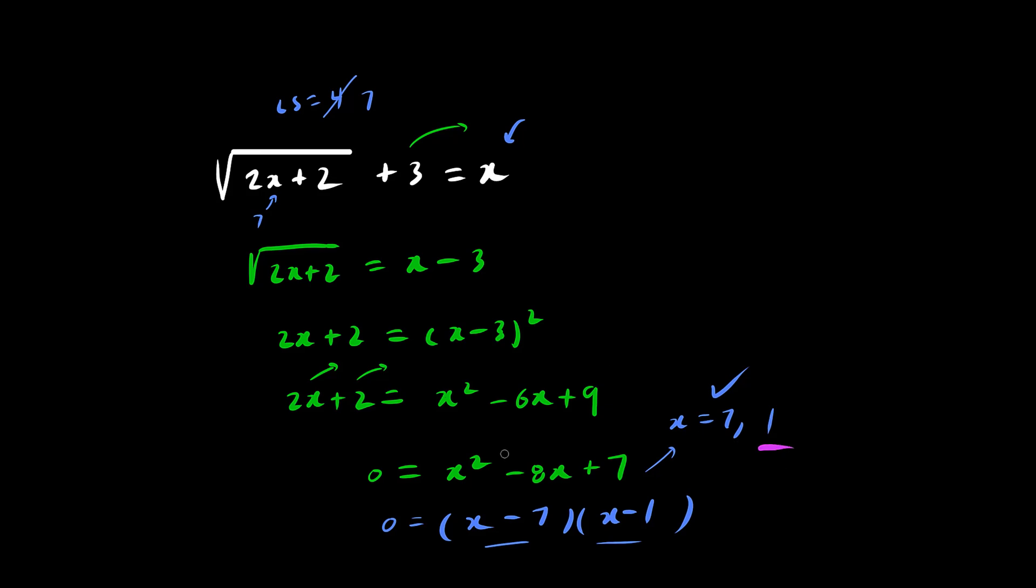Now let's try x equals 1. When you plug in 1, we have 2 times 1, which is 2, plus 2 is 4. The square root of 4 is 2, plus 3 is 5. So left side equals 5. And the right side is 1. So left side does not equal right side, so we need to reject this root. So here is the correct answer.